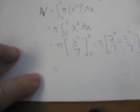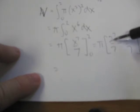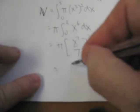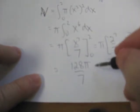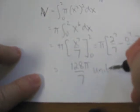So, this becomes pi by 2 to the 7 on 7, minus 0 to the 7 on 7. This comes out to be 2 to the 7 will be 128 pi on 7, and this is 0, so this is going to be units cubed, because remember, we found a volume.